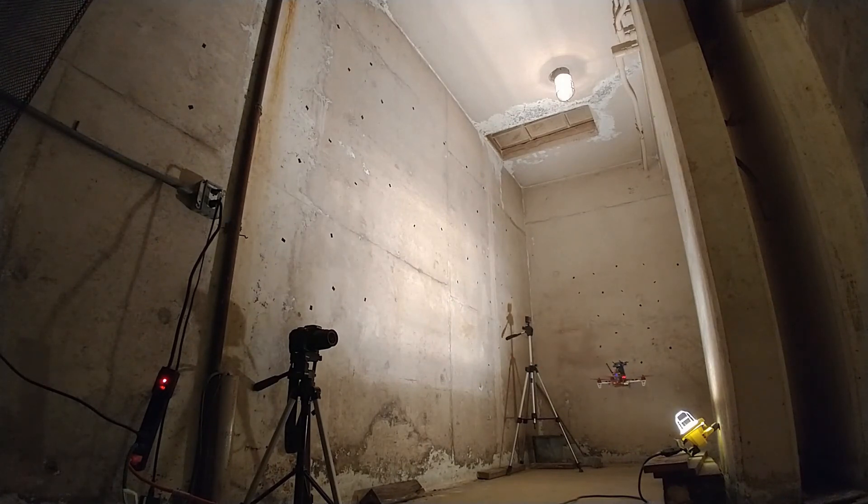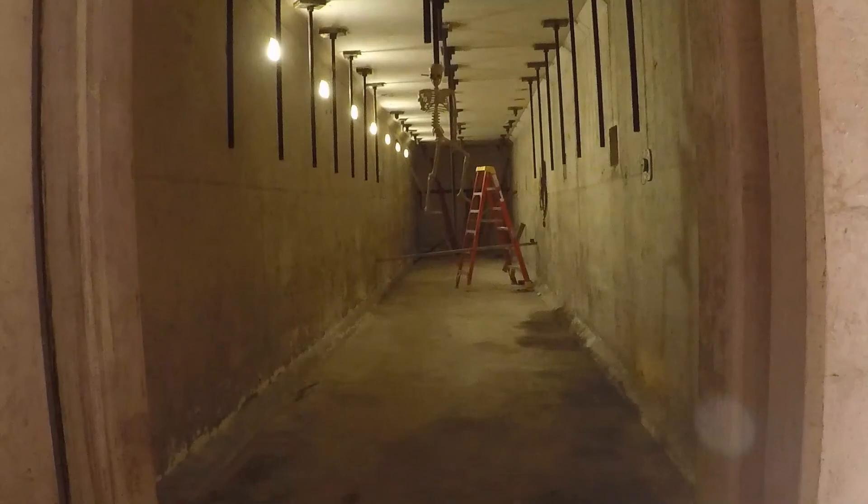In the second hallway, the vehicle avoids obstacles hanging both from the ceiling as well as several obstacles leaning against the walls. Here, each hallway is roughly 20 meters long and 2.5 meters in width and height.